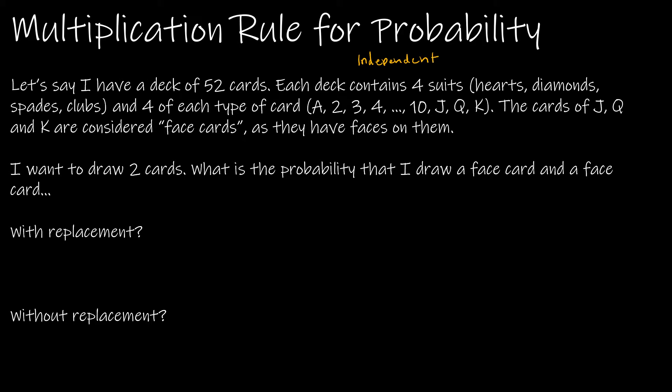Independent means whether the outcome of one event influences the outcome of the next event. For instance, if I roll a die, whatever I get the first time does not influence what I get the next time. But if I'm drawing a card out of a deck and I keep that card out — without replacement — that certainly affects things because there's a different number of cards in the deck. So let's take a look.